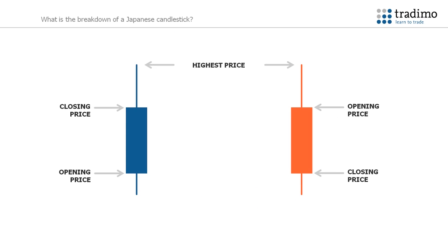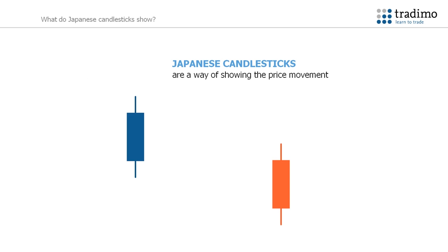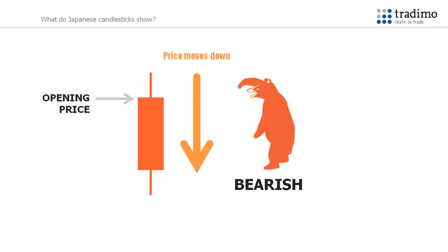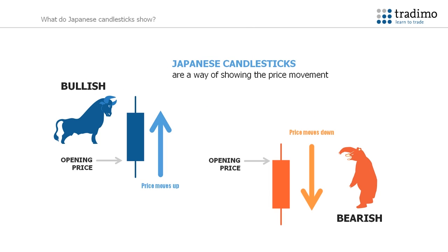The wicks show you the highest and lowest price that has been reached during the period of the candle. The colour of the candlestick will tell you whether prices have risen or fallen during the period. A candlestick that is rising is referred to as bullish — this stems from the way a bull fights, using his horns to throw his opponent in the air. A candlestick that is falling is referred to as bearish — when a bear fights, it uses his claws to smash his rival on the ground. The actual colours do not matter; they can be set to any colour you like. The colours are simply a way of telling you the direction of the price during a period.